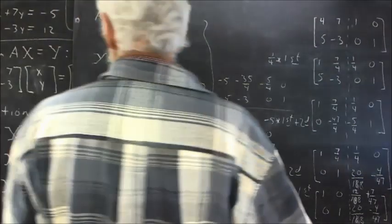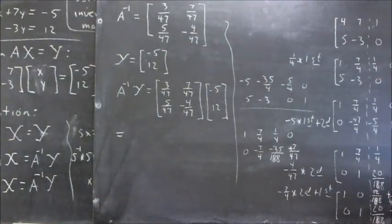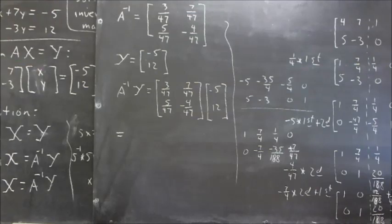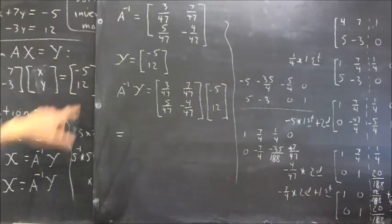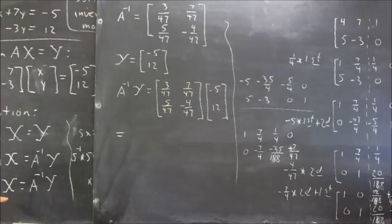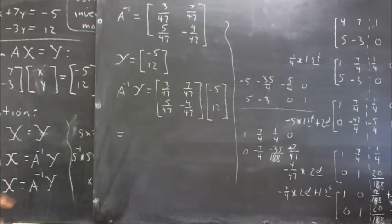Now, as we saw previously, our original system can be written as a matrix equation, where the x vector is xy, and the y vector is negative 5, 12. And the solution to the system is for the x vector, the xy column vector, to equal A inverse times our y vector.